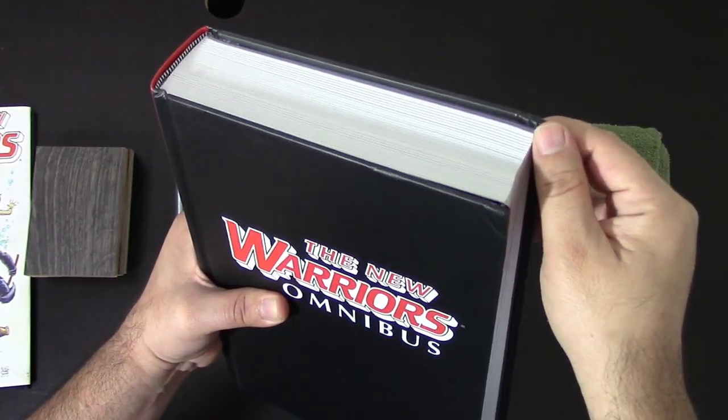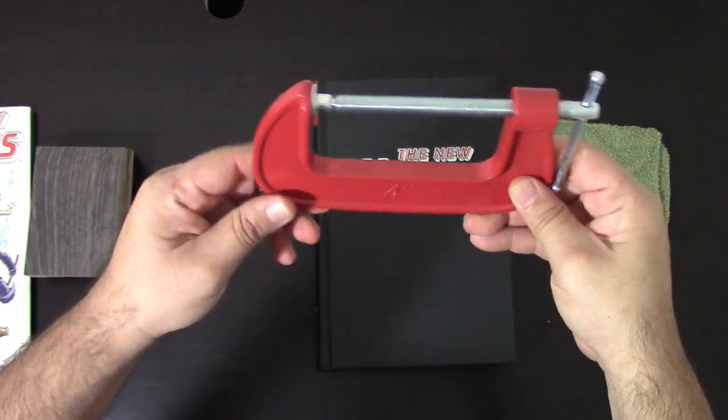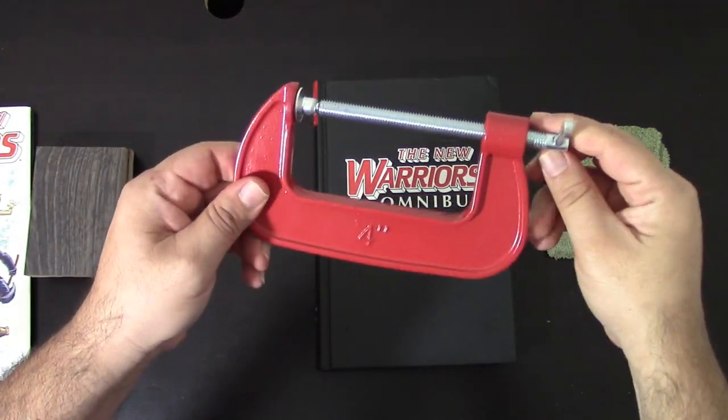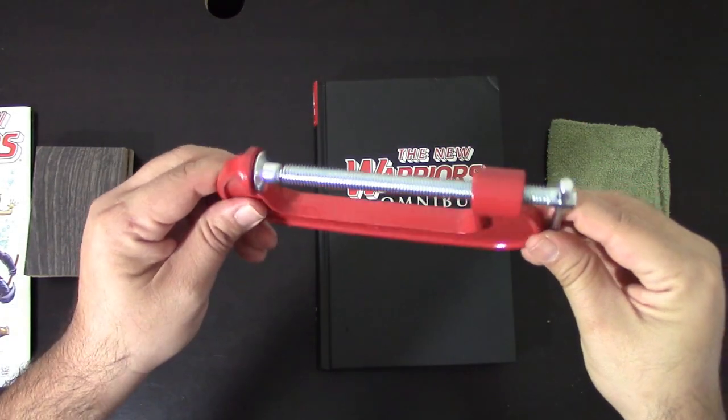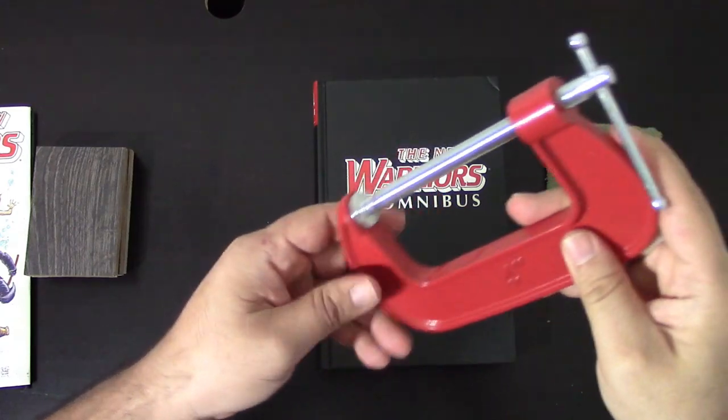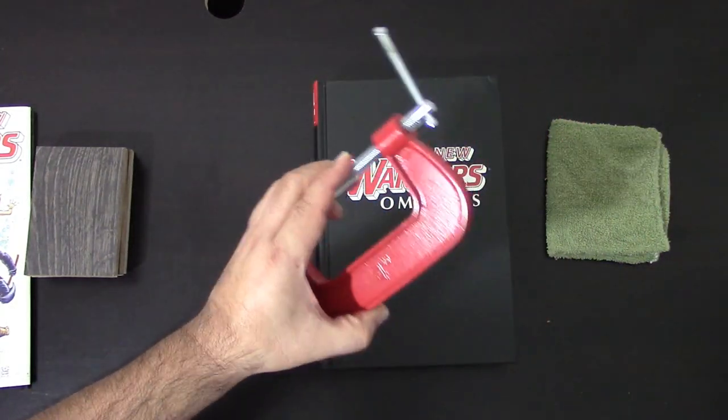We need a C-clamp. And in this case, a regular C-clamp. I bought this at Walmart. It's a four inch C-clamp. I think this is the best size to do this. You can even use a three inch as long as you have enough pressure. So it matters is the way you do it. And this is not expensive. You can find this at any hardware store.